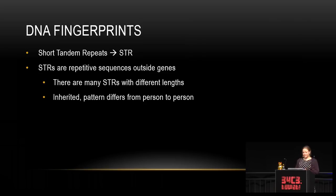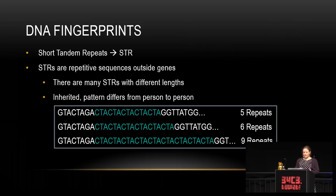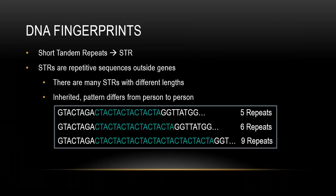DNA fingerprinting means checking for short tandem repeats, or STRs. These are repetitive sequences outside of genes, so they have nothing to do with how we look. There are many STRs with different lengths that are inherited, and the pattern differs from person to person. For example, a repeat like CTA might occur five, six, or nine times — and the number of repeats is what differs.